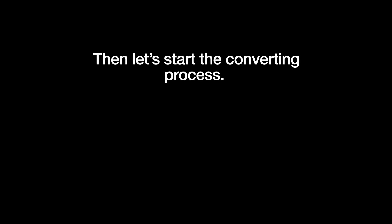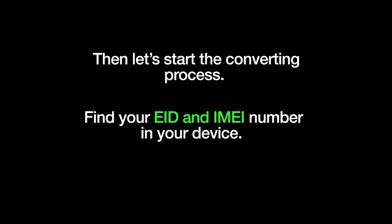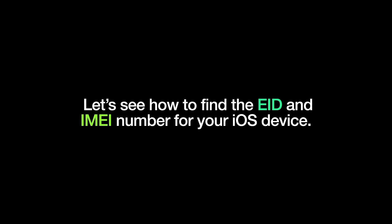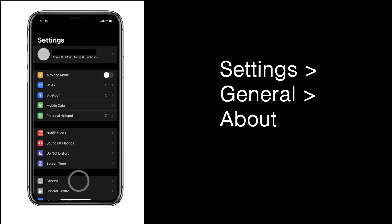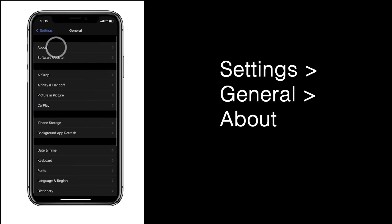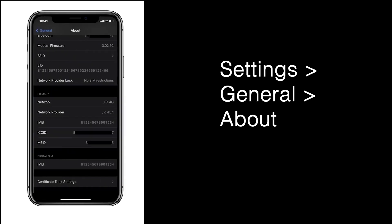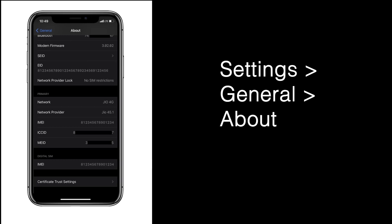First, find the EID and IMEI number on your device. Go to Settings, tap on General, and open About. Scroll down to find the 32-digit EID and the 15-digit IMEI number. You will also find an IMEI 2 number, but you will not use the second IMEI number here. Note down the EID and IMEI number.